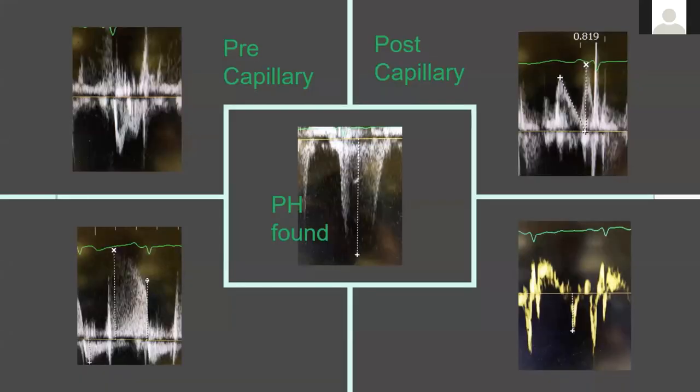So how do we put this together? If tricuspid regurg shows pulmonary hypertension, ask: is it pre or post-capillary? Post-capillary PH will show high E/E' ratios. Pre-capillary PH will show notches or very high end-diastolic pulmonic regurgitant velocities. If mixed, you'll have a high E/E' ratio and an end-diastolic velocity that's way higher than your estimated left atrial pressures.